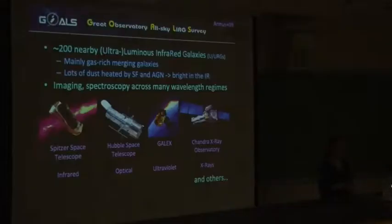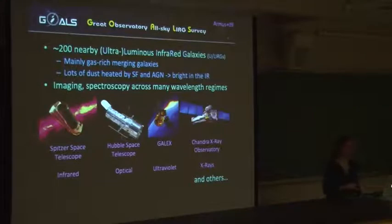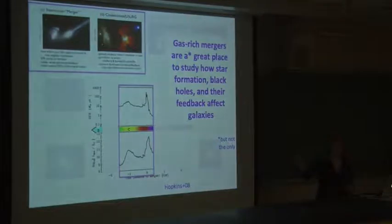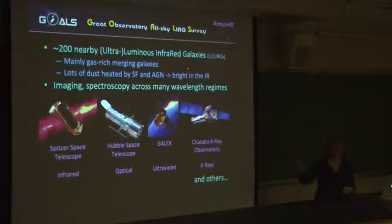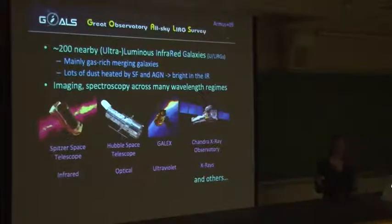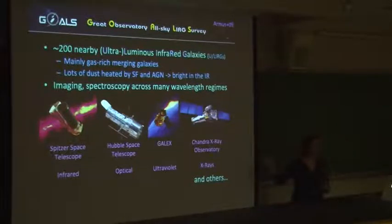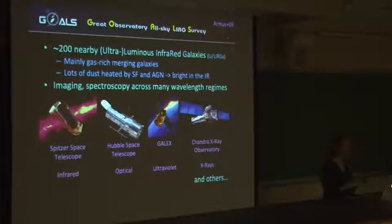With that in mind, we turn to the Great Observatory All-Sky LIRG Survey. LIRGs are luminous infrared galaxies. In the nearby universe, they're essentially giant trainwreck mergers that have a lot of dust, star formation, and AGN activity going on in the center, which makes them very bright in the infrared. This survey over many years has looked at them with all sorts of different observatories — basically anything we could get our hands on. It started with Spitzer, Hubble, GALEX, and Chandra, but has moved on to Herschel and VLA radio data. Multi-wavelength data gives us the most complete picture of black hole and star formation activity.